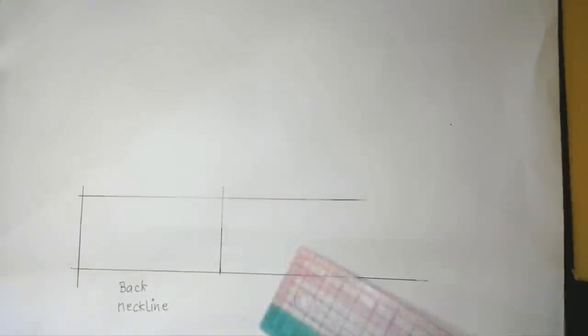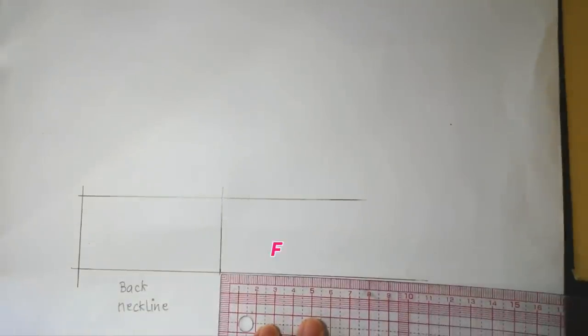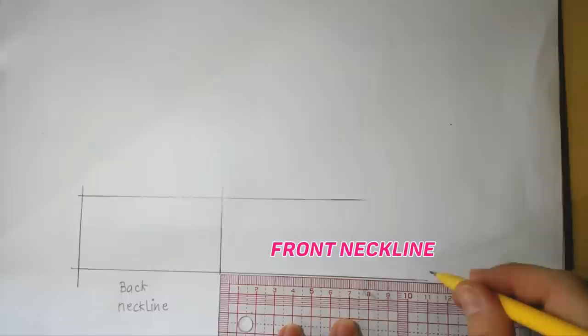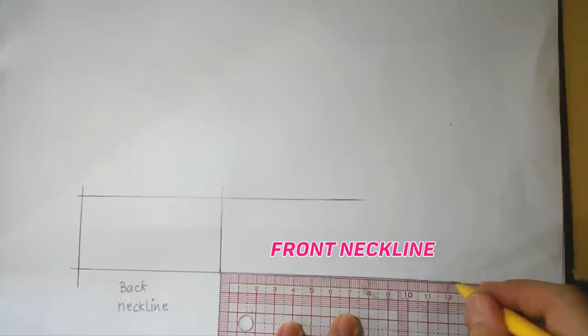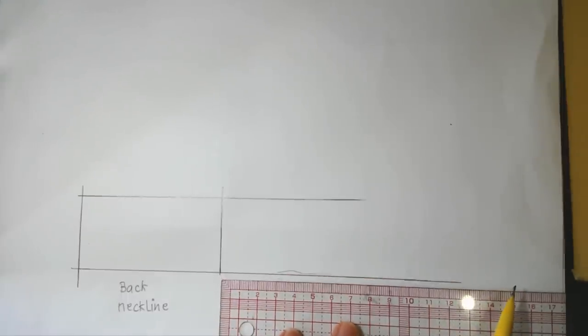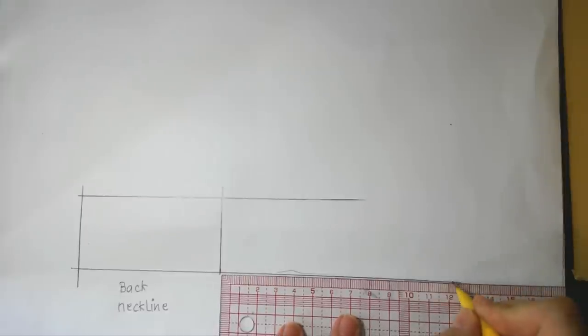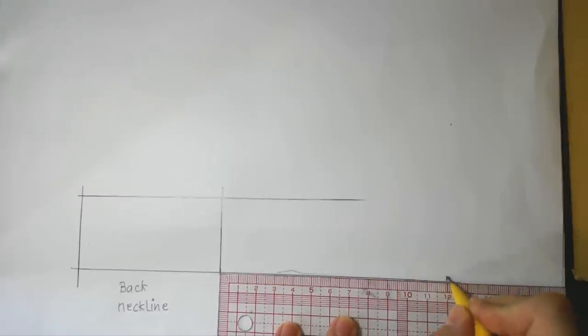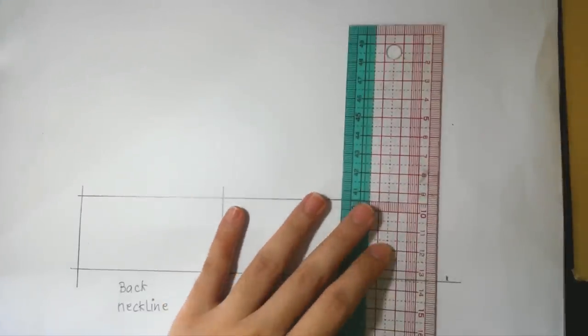Continuing to the front, mark based on the half front neckline measurement. Draw a perpendicular line from the mark.